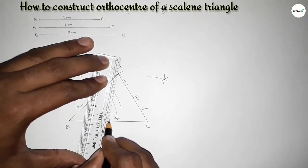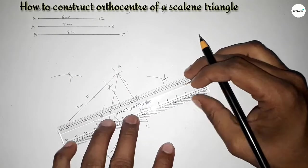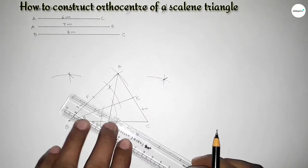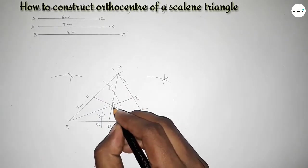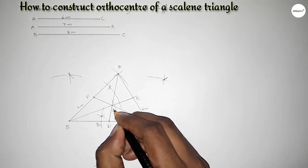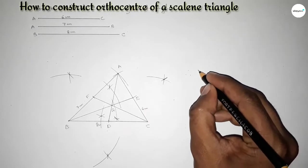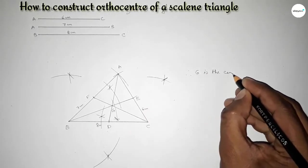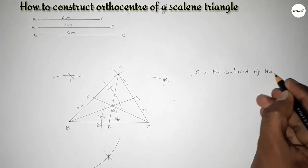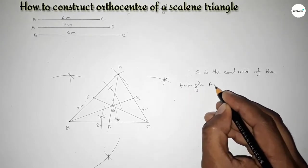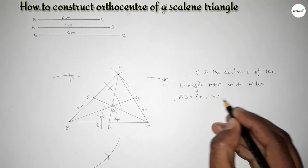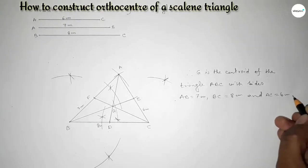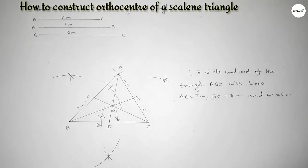Now first joining the median AD, then joining the median BE, and last joining the median CF. The three medians intersect at a point — taking here point G. Therefore G is the centroid of this scalene triangle ABC, with AB equal to seven centimeters, BC equal to eight centimeters, and AC equal to six centimeters. That's all — thanks for watching. If this video is helpful to you, please share it with your friends. Please like and share.